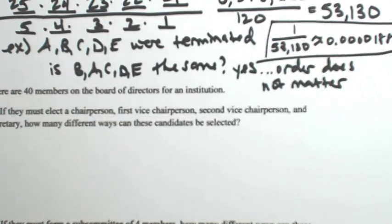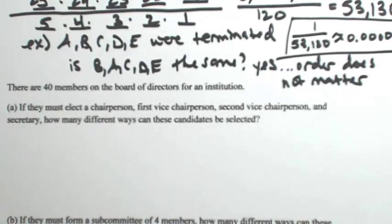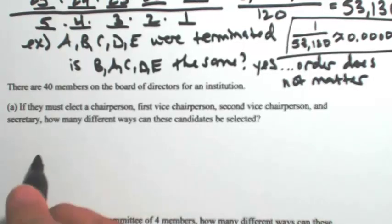Let's look at this next one here. So let's say we have 40 members on the board of directors for an institution. Part A, if they must elect a chairperson, a first vice chairperson, a second vice chairperson, and a secretary, how many different ways can these candidates be selected?